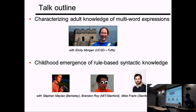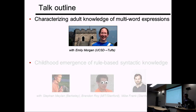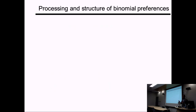I'll give you illustrations of it. One characterizes adult knowledge and the distribution of multi-word expressions in the language — work with Emily Morgan, who is a postdoc at Tufts and moving to UC Davis as a faculty member. The other is a case study on the childhood emergence of rule-based syntactic knowledge, with collaborators at Berkeley, MIT, Twitter, and Stanford. I'm going to start with binomial expressions, and I'm actually going to test your intuitions about ordering preferences — a good opportunity since I've never done this with a bilingual crowd before.